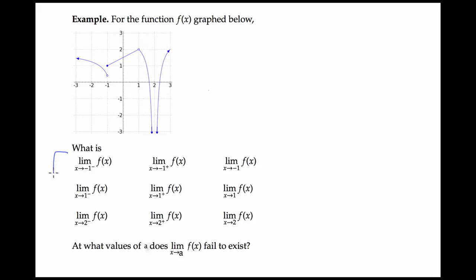Let's start with x approaching negative 1. When x approaches negative 1 from the left, the y values seem to be approaching about 1 half. When x approaches negative 1 from the right, the y values seem to be approaching 1. So when x approaches negative 1, and we don't specify from either the left or the right, we can only say that the limit does not exist, because these two limits from the left and right are not equal.